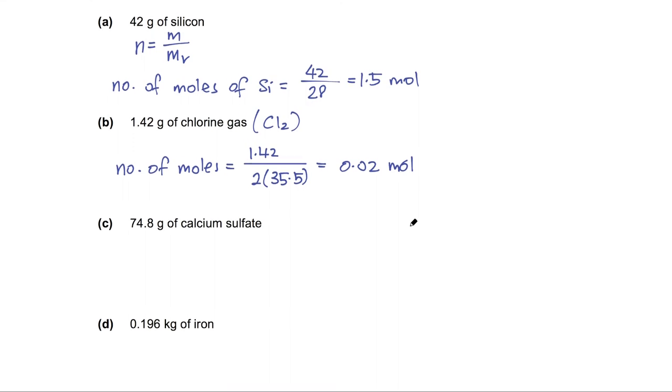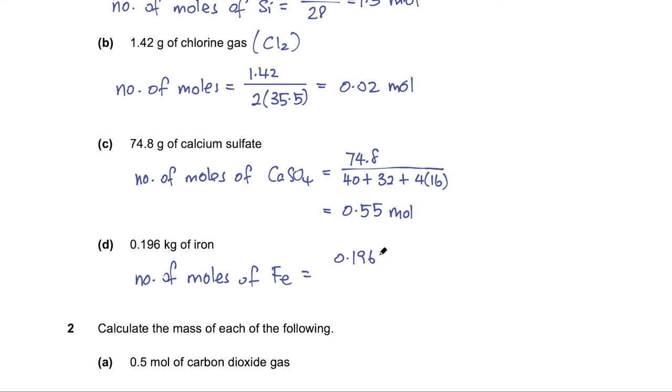Now pause the video and try the next two examples. Now check your answer. Do you get the correct answer? For part D, it is important to remember that the mass must always be converted to grams. So from kilograms to grams, we need to multiply by 1000. Also check, do you include the units?